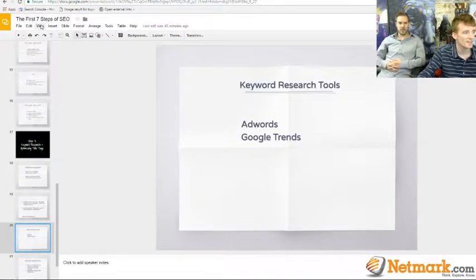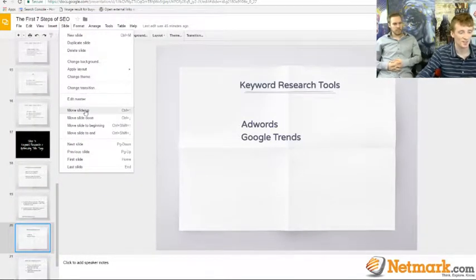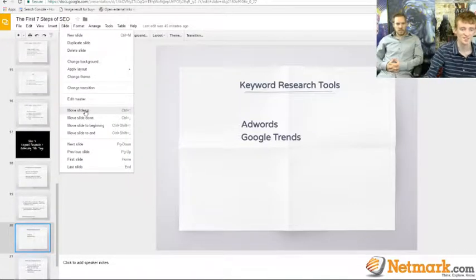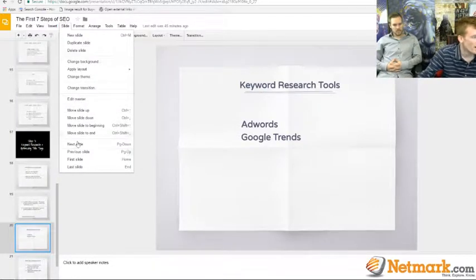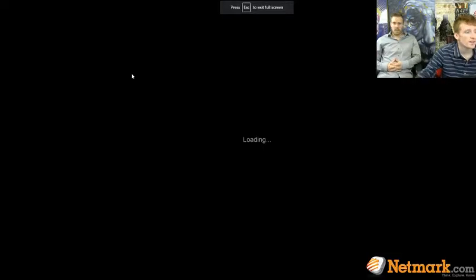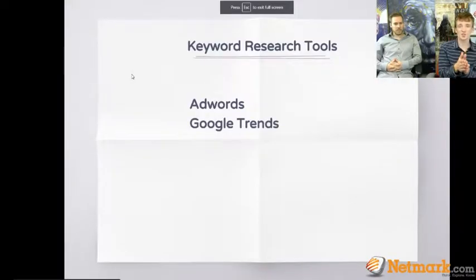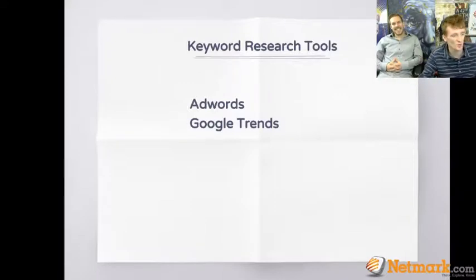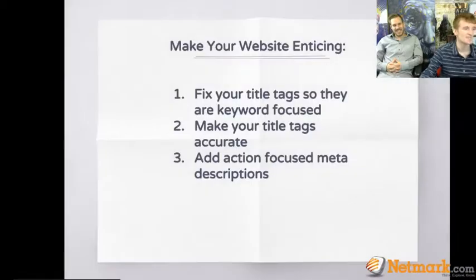Play around with it and let us know if you have any questions. Those are the two tools — Google AdWords Keyword Planner and Google Trends — that you should get familiar with. And they're completely free. Google wants you to use them so you'll spend money running ads through them.